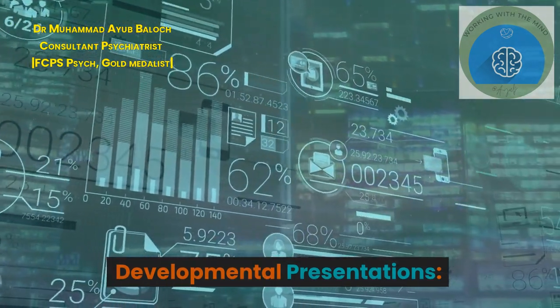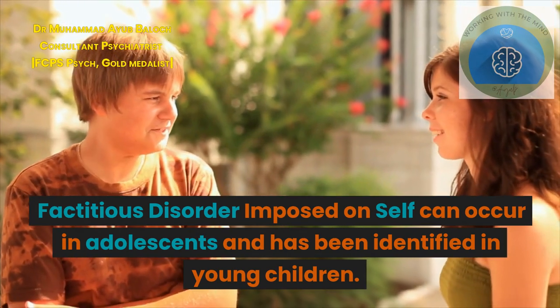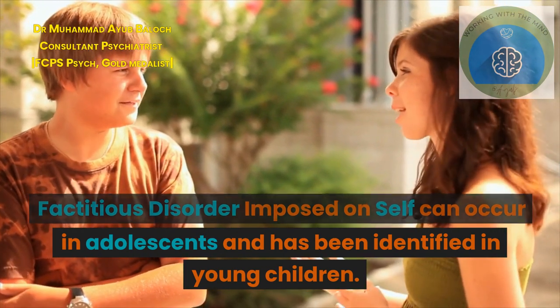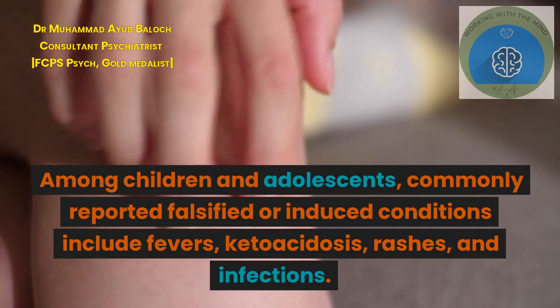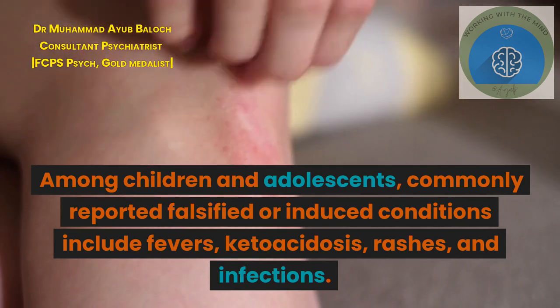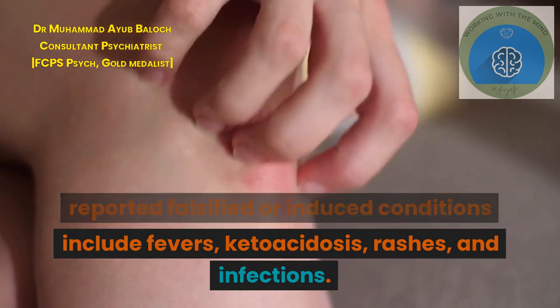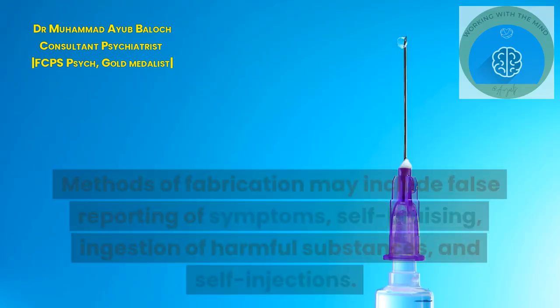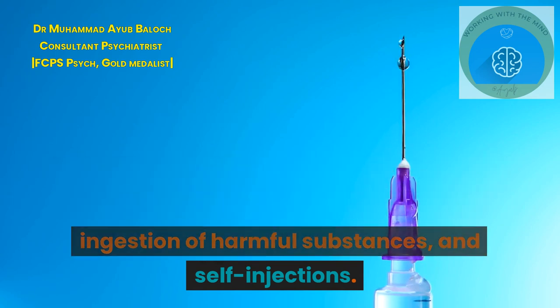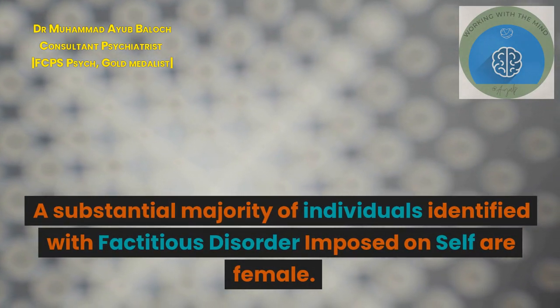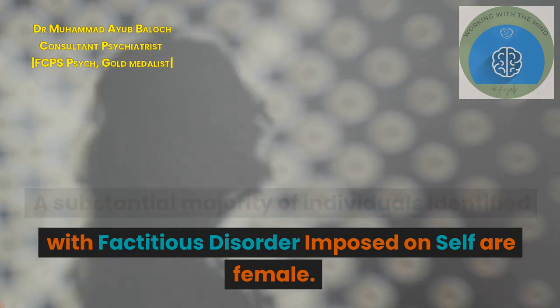Developmental Presentations: Factitious disorder imposed on self can occur in adolescents and has been identified in young children. Among children and adolescents, commonly reported falsified or induced conditions include fevers, ketoacidosis, rashes, and infections. Methods of fabrication may include false reporting of symptoms, self-bruising, ingestion of harmful substances, and self-injections. A substantial majority of individuals identified with factitious disorder imposed on self are female.